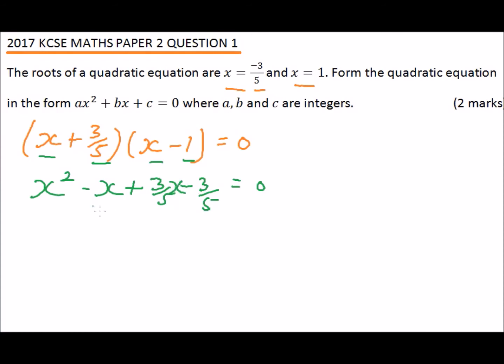Let's put the common terms together. We have x squared, minus x plus 3 over 5x will be minus 2 over 5x, and then minus 3 over 5 equals 0.